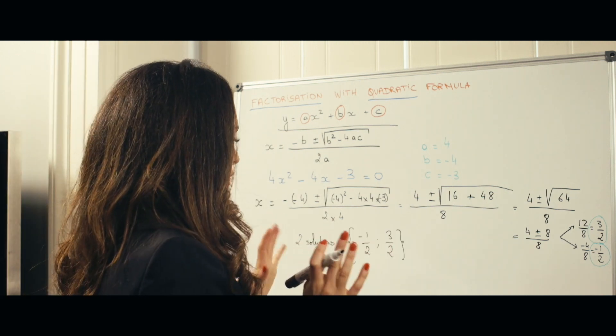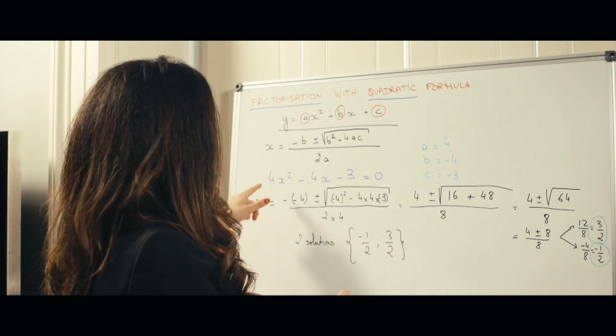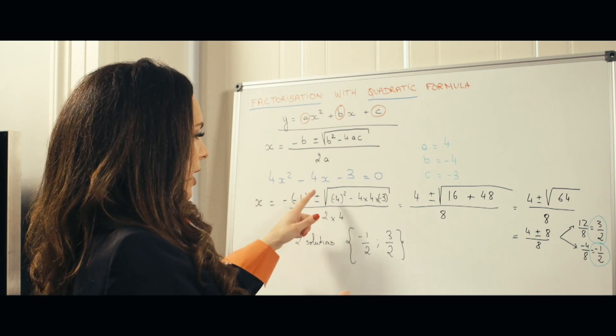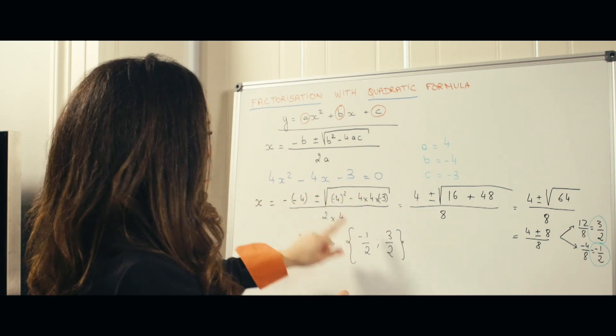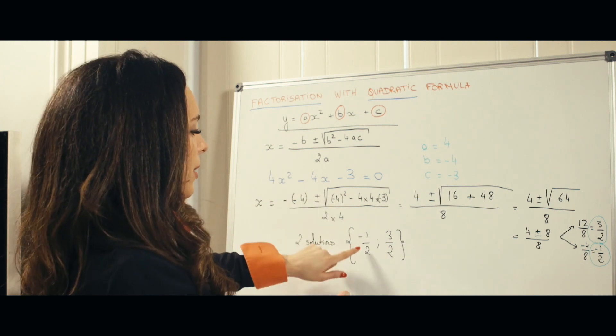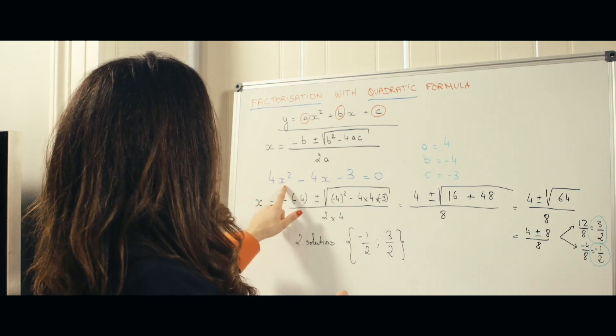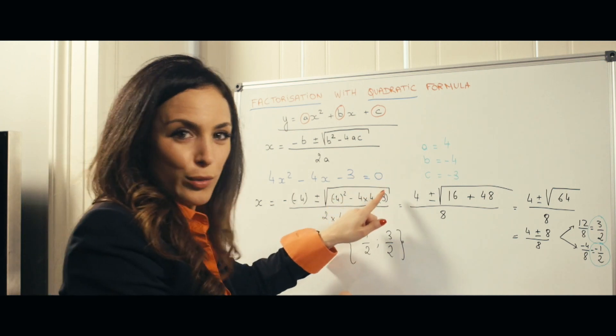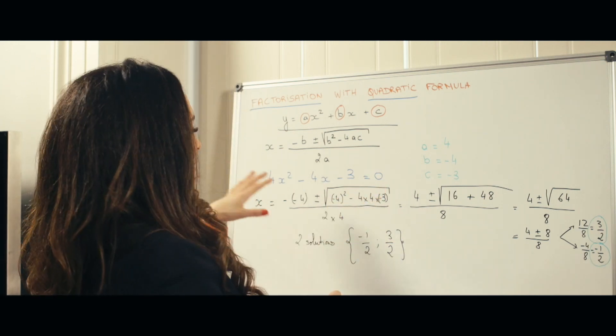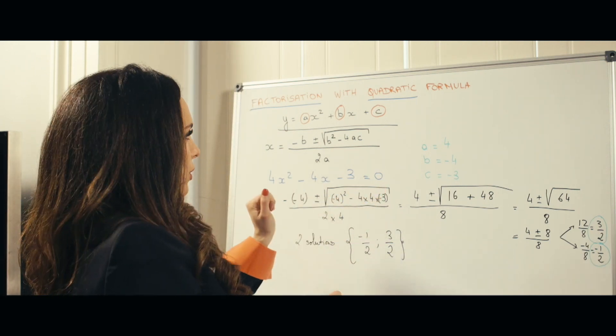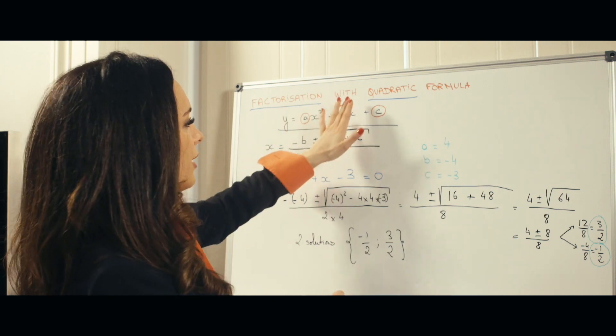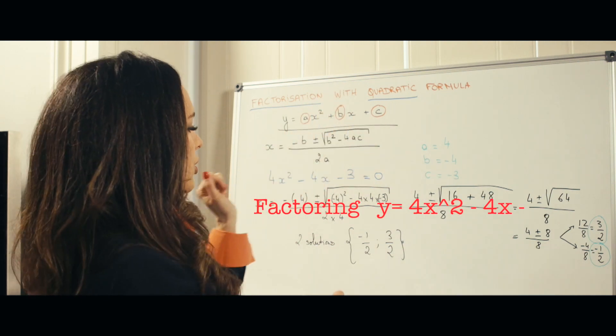Now we've got these two solutions for x such that 4x squared minus 4x minus 3 equals 0. If you replace x by minus 1 half or 3 halves, you'll see this equals 0. This solves the equation equal to 0. But if you wanted to actually factorize this quadratic expression...